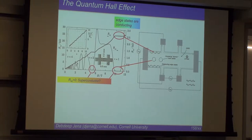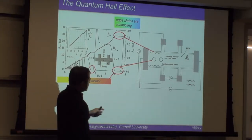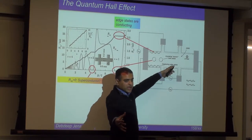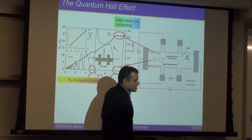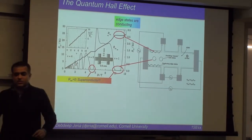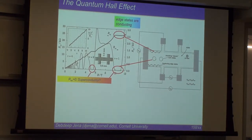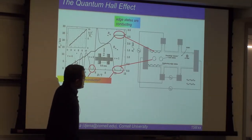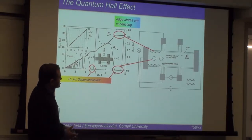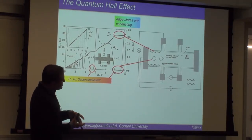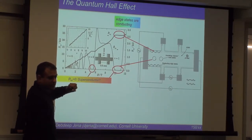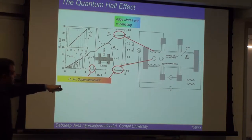The bulk behaves like an insulator — like a gas of atoms with no band connecting them — while the edge is a conductor. This carries over to topological insulators: in a three-dimensional topological insulator, the bulk is an insulator but current flows on the surface of the material. It's an extension of this edge-state idea.